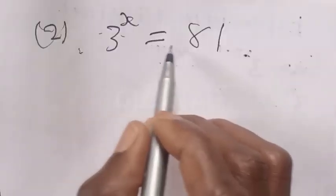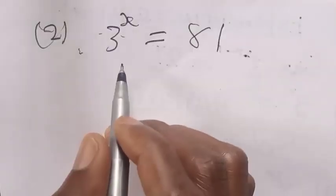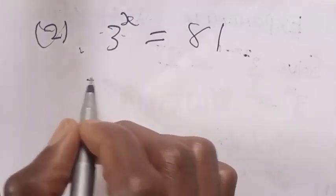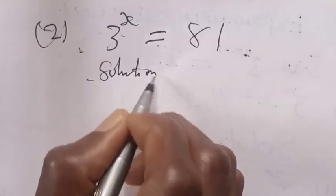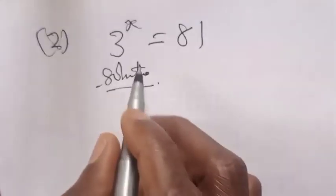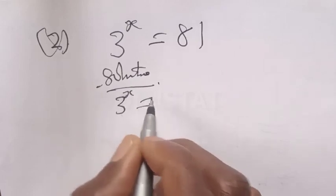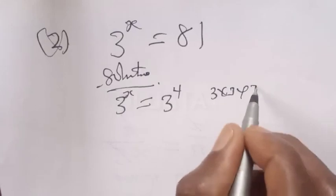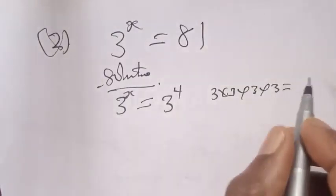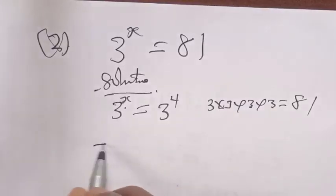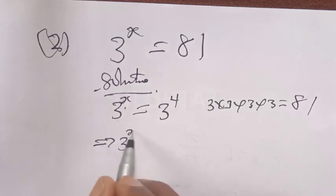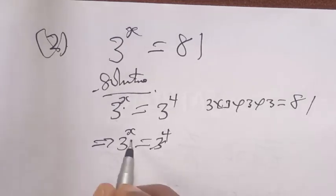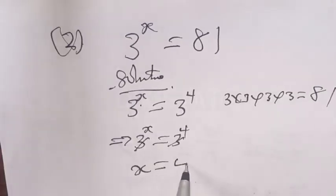Question number 2 says: 3 raised to power s is equal to 81. This is an exponential equation also. We have 3 raised to power s, which can be expressed as 3 raised to power 4, because 3 times 3 times 3 times 3 is equal to 81. So 3 raised to power s is equal to 3 raised to power 4. They have the same base, so we cancel it, and s is equal to 4.